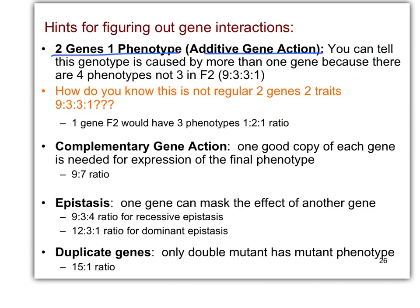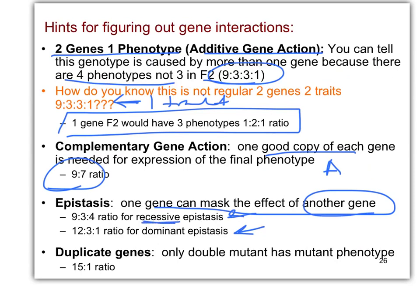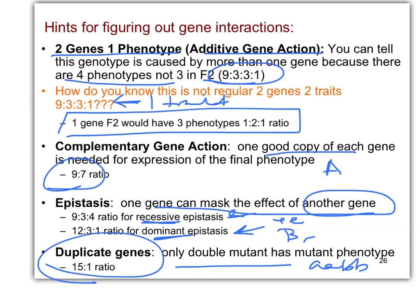2 genes, 1 phenotype: additive gene action — 4 phenotypes in the F2, and it's 9 to 3 to 3 to 1. How do you know this? Well, it's only one trait, so it can't be a dihybrid — dihybrid means two traits. Complementary gene action, duplicate recessive epistasis — all you need is one good copy of each gene, or one that is needed to be expressed in the final phenotype. For epistasis — either recessive or dominant — one gene masks the effects of another gene, either in the recessive state or dominant state. And for duplicate genes, only the double recessive homozygous has the mutant phenotype.